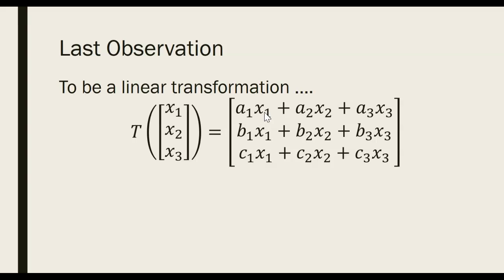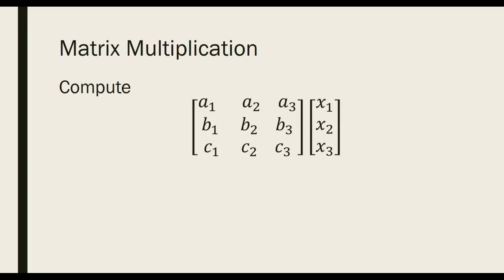If our input is a three-dimensional vector and our output is a three-dimensional vector, then each entry of the output is a linear combination of X1, X2, X3. There are no constant numbers other than the coefficients — just a linear combination of X1, X2, X3 in the first spot, a linear combination in the second spot, and a linear combination in the third spot.